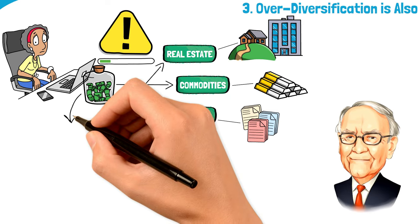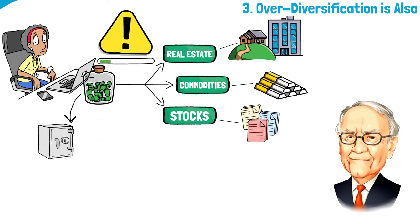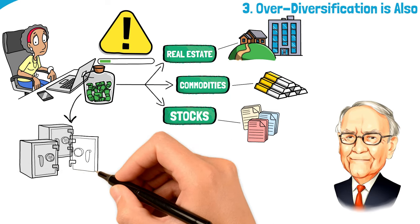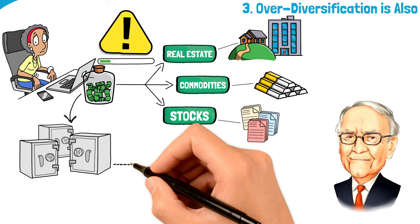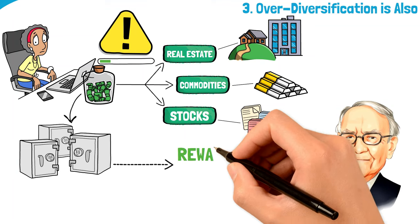But here's where it gets interesting: Buffett tells us that you can actually have too much of a good thing. Yeah, you heard that right. Over-diversifying, especially with ETFs, might not be the golden ticket we thought it was.